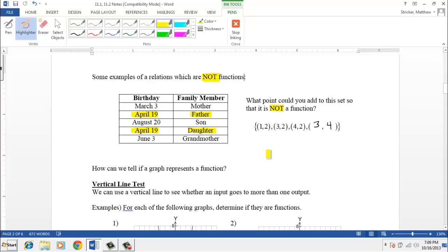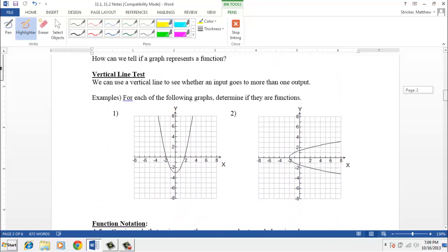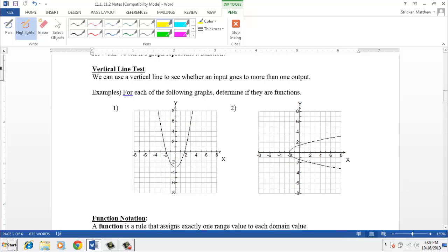Okay, one of the other ways we saw to represent functions was with graphs. How do we tell if a graph represents a function? Well we use what's called the vertical line test. We can use the vertical line test to see whether an input goes to more than one output.